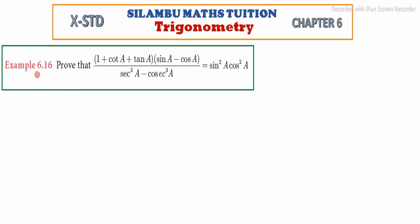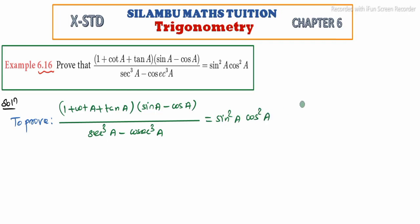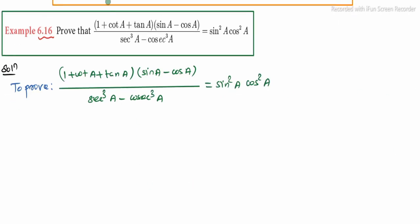Hi students. In this video, Example 6.16 — we need to prove: (1 + cot A + tan A)(sin A - cos A) divided by sec³A minus cosec³A is equal to sin²A into cos²A.